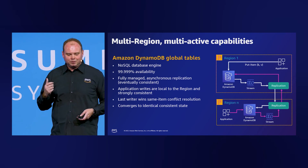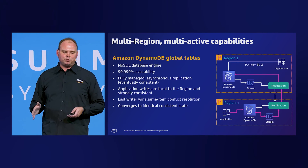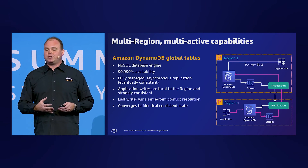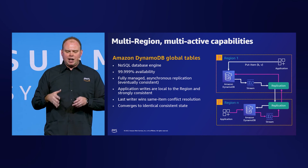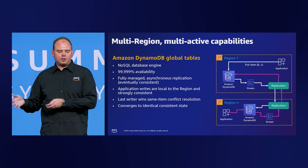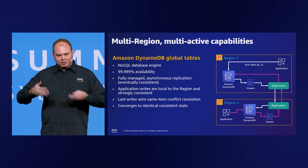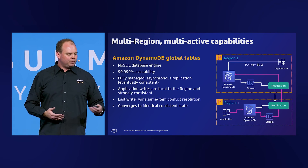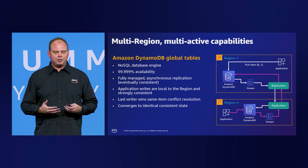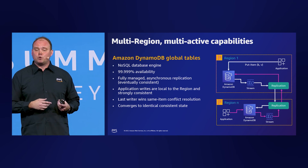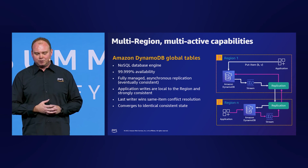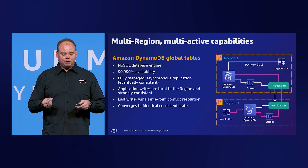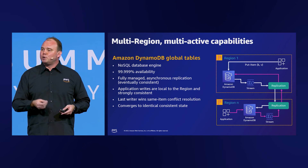DynamoDB global tables offer a multi-region, multi-active solution where you can write locally to every region. Writes are fast and then replicated to other regions — you get strong consistency in the local region and eventual consistency in the other regions. Any conflicts are resolved using a last-writer-wins process — whoever wrote to the database last is considered the truth. The global database eventually converges on an identical consistent state. Global tables are built on AWS's global footprint to provide fully managed multi-region, multi-active performance for massively scaled global applications, eliminating the difficult work of replicating between regions yourself and resolving conflicts.